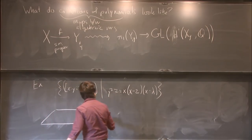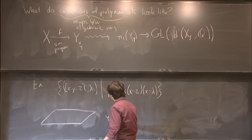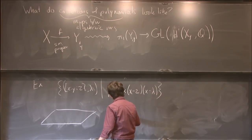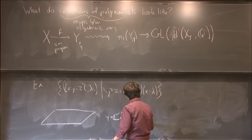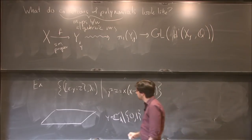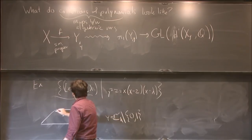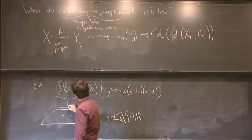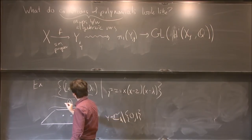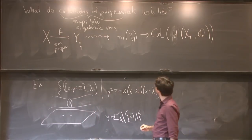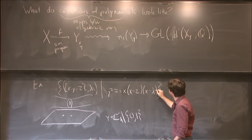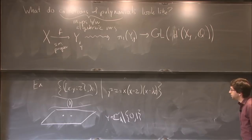except if lambda is at 0 or 1. So I'm going to restrict y, the target of this map, to be c minus the points 0 and 1, sort of bad points for the topology of this changes. Thank you.